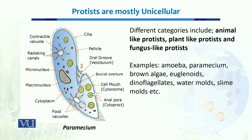When we talk about the categories of protists, different types exist: we have animal-like protists, plant-like protists, and fungus-like protists. There are some protists which function just like animals, and many which exist just like plants in this ecosystem, while others exist just like fungi — they are neither animal-like nor plant-like.